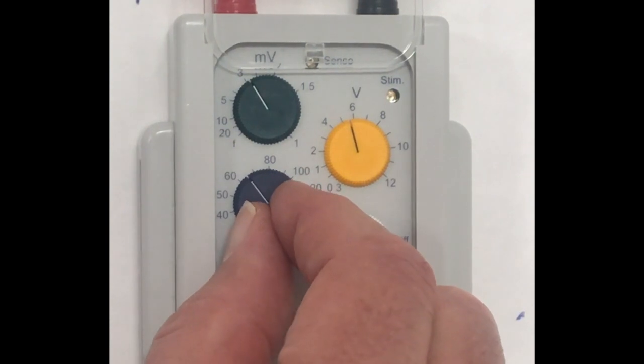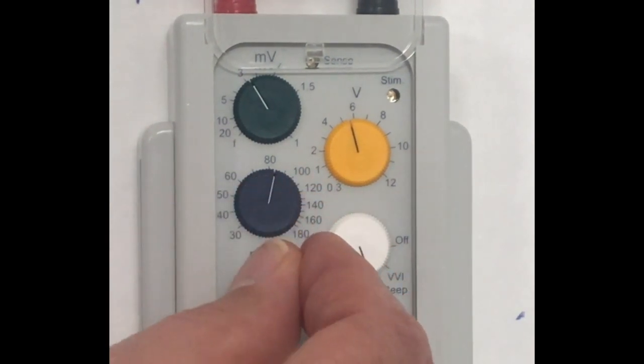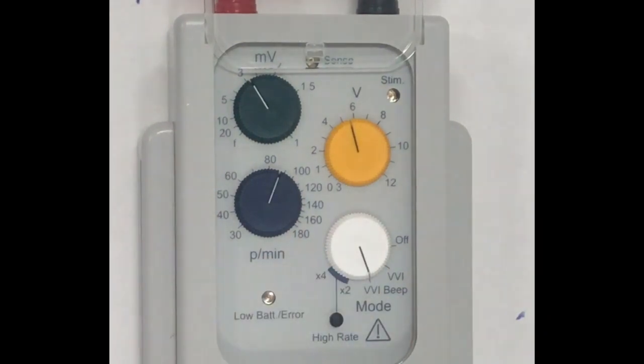So at the moment it's 60, just to make absolutely certain I'm higher than the intrinsic, I might move this up to somewhere close to 90 beats a minute.